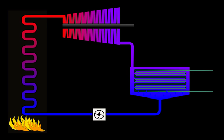Process 2-3, the high pressure liquid enters a boiler, where it is heated at constant pressure by an external heat source to become a dry saturated vapor. The input energy required can be easily calculated graphically using an enthalpy-entropy chart or Mollier diagram, or numerically using steam tables. In other words, process 2-3 is constant pressure heat addition in boiler.